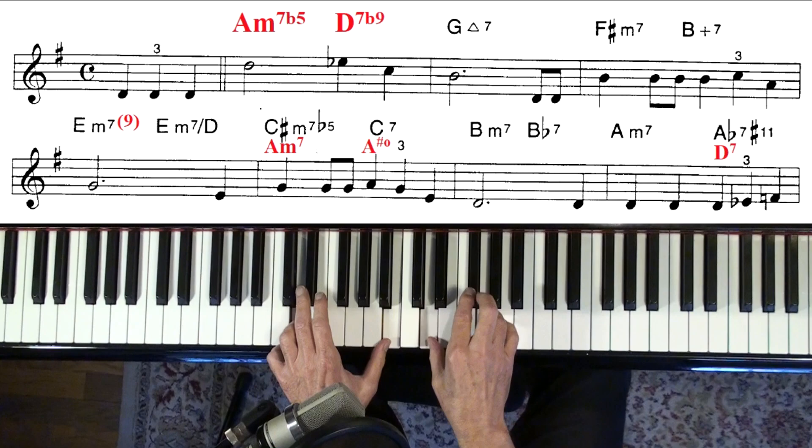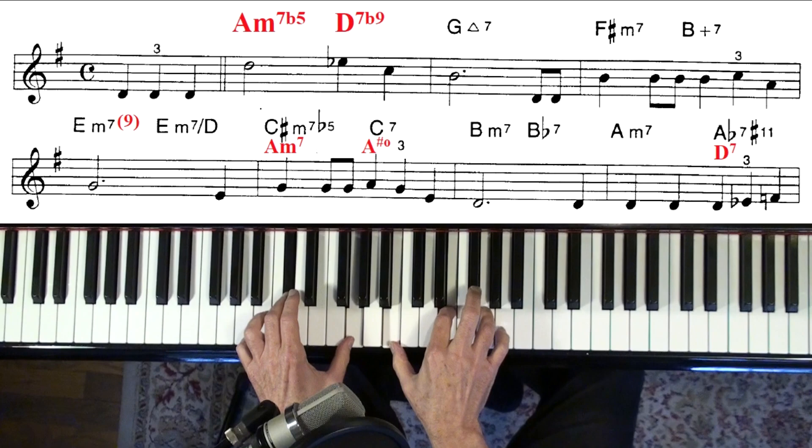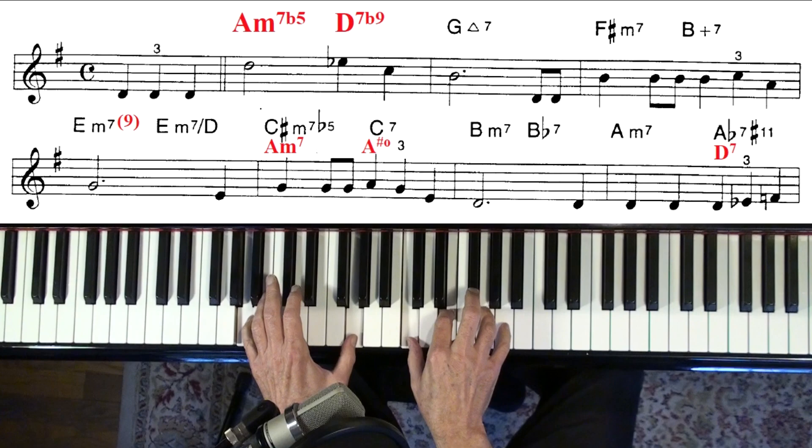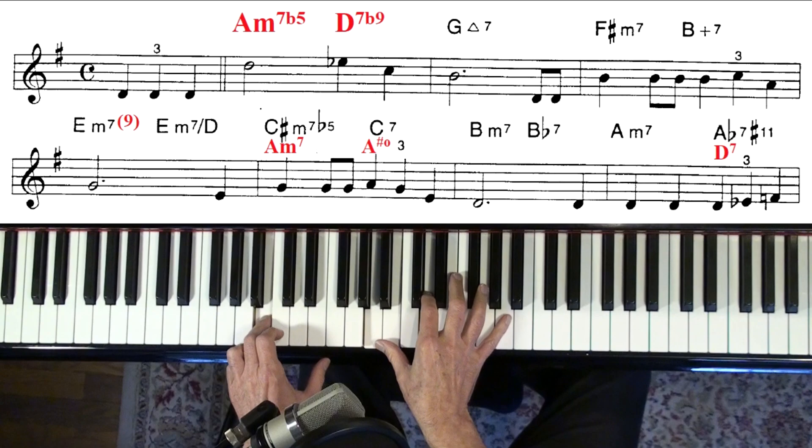And then C sharp minor seven flat five to C 13. C seventh but with a 13. Now another way to do it would be A minor seven, A sharp diminished. That was Diana Krall's version.